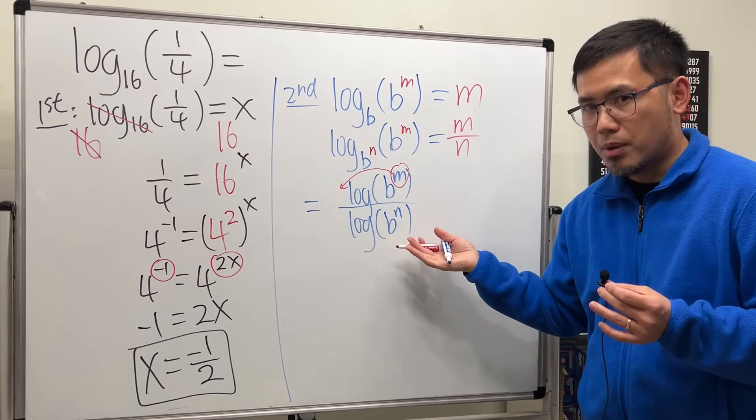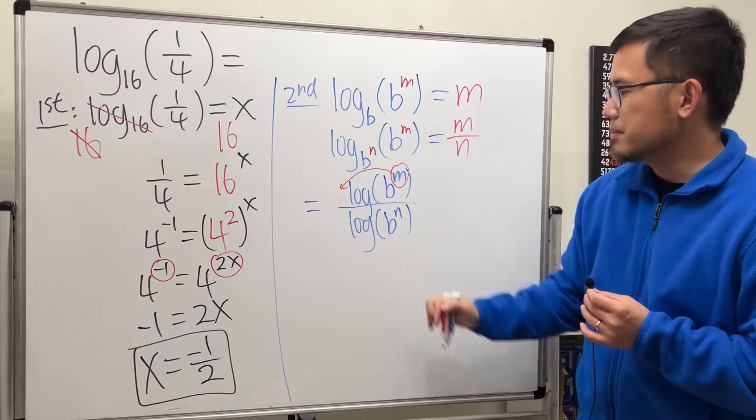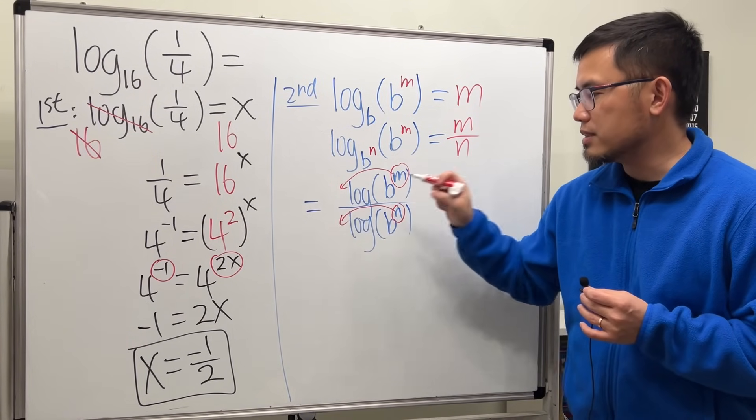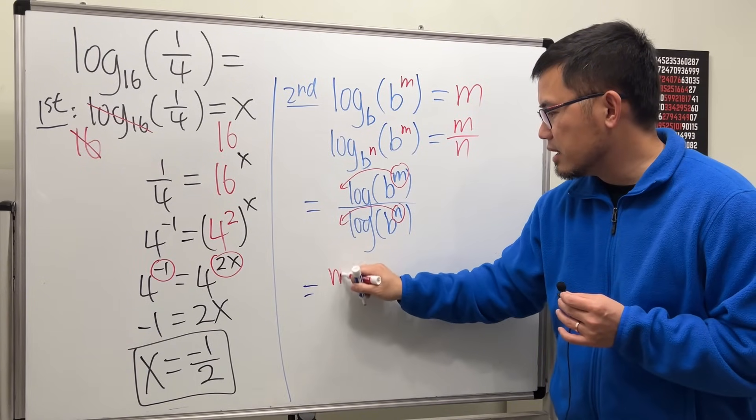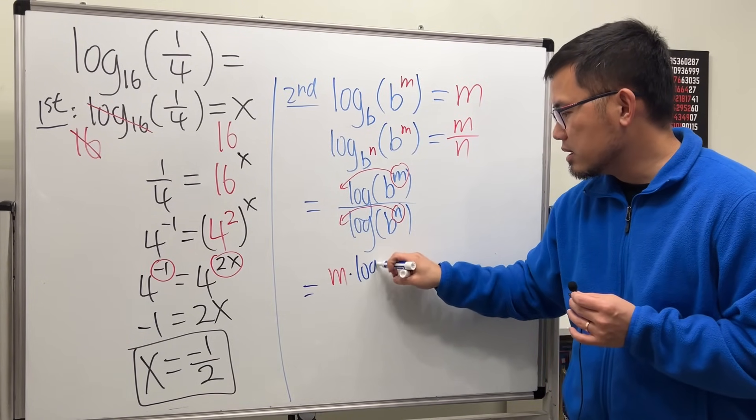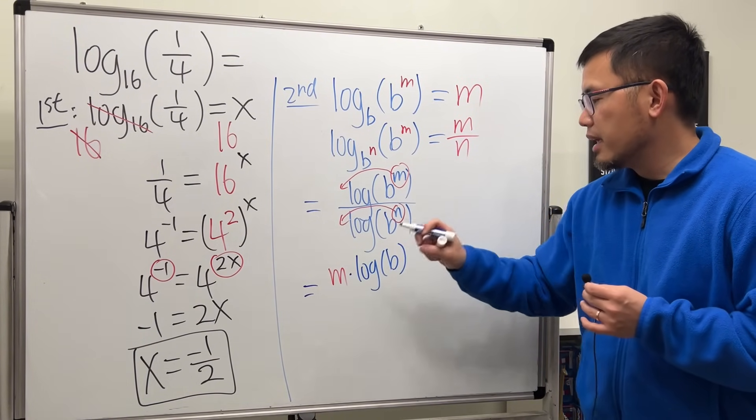And likewise on the bottom, we can put the n to the front. So as you can see, we will get m in the front times log of b, and then over n in the front times log of b.